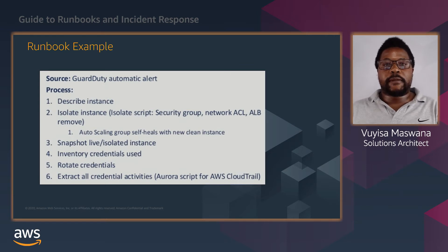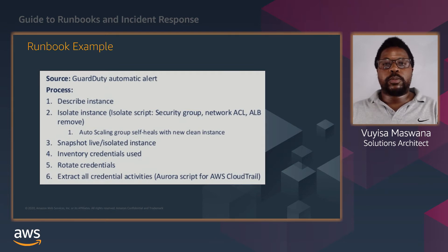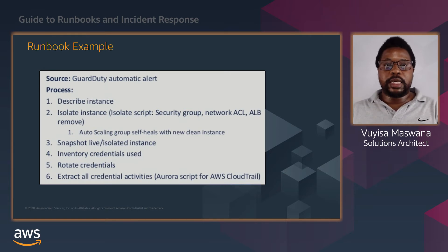We can describe the instance to get the instance metadata and get more information about it. Then we can start the isolation of that instance by locking down the security groups, locking down the network access control list, and removing it from the network load balancers. As a best practice, EC2 instances should be behind an auto-scaling group — the auto-scaling group comes with self-healing capabilities that would launch a new instance whilst this isolated instance is unavailable, allowing the business to continue its operations. We can then go back and snapshot that instance, take an inventory of the credentials, rotate the credentials to get new credentials, and then extract all that credentials information.